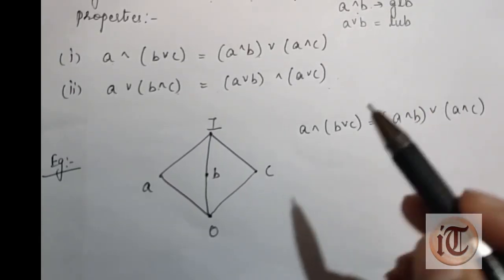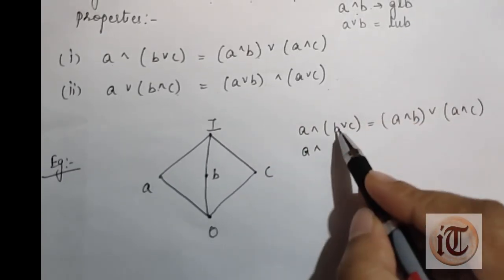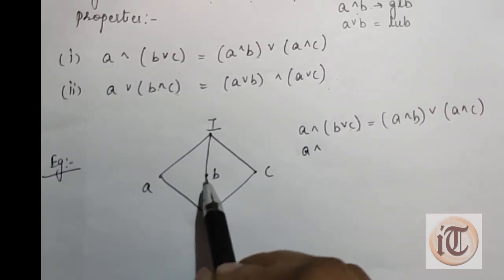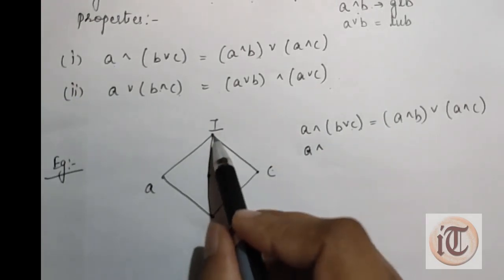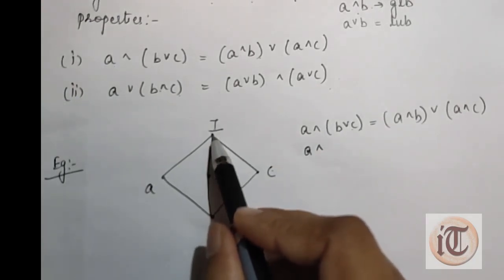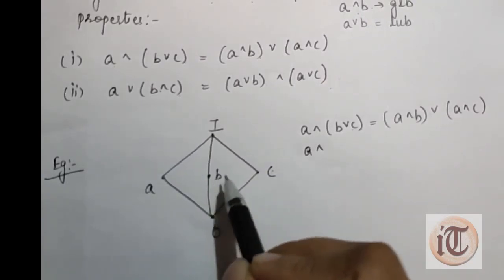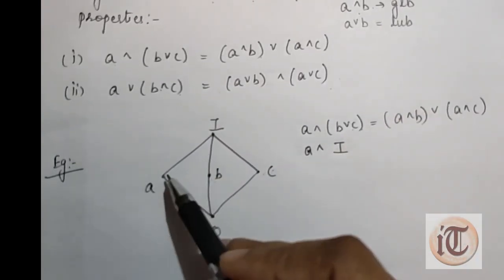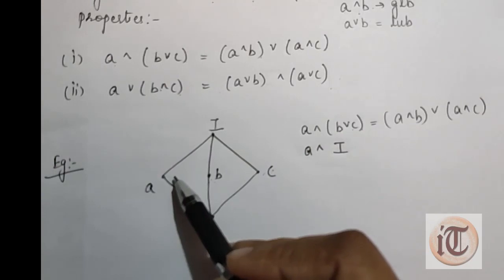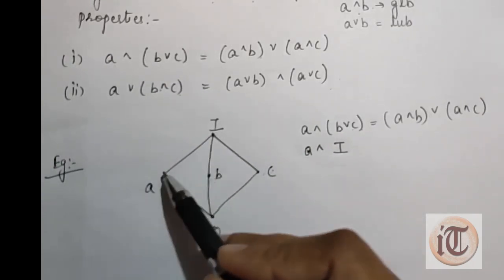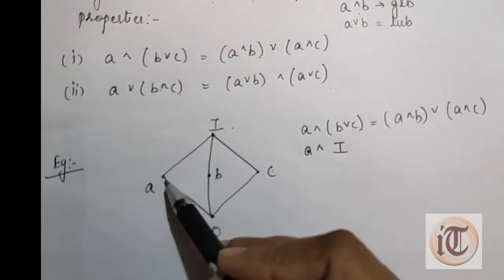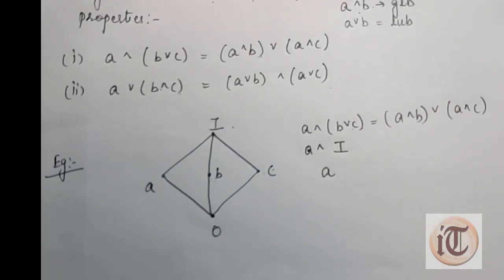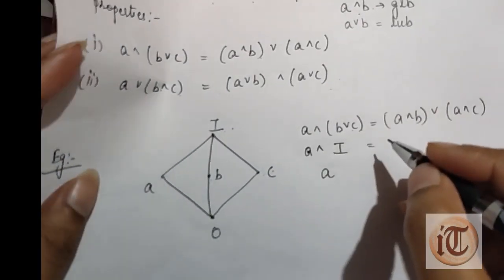First we compute the left-hand side. B ∨ C means the least upper bound of B and C. The upper bound of B and C is I, and I is the unique element, so the least upper bound of B and C is I. Now A ∧ I: the greatest lower bound of A and I is A, since A is the lower bound. So the left-hand side equals A.